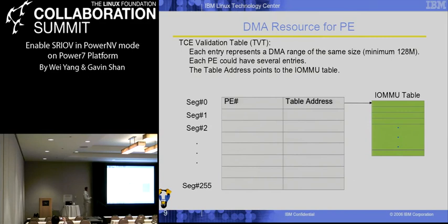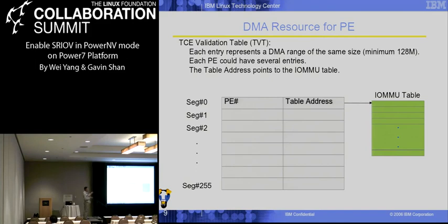The next one is called the CBT, the TCE Validation Table. This table is used to validate the DMA address and to do IOMMU mapping from the DMA address to the critical memory address. Each entry in this table represents a range of DMA space with the same size, but the minimum size on the Power platform is 128 megabytes. A PE can have several entries in this table if it requires more DMA resources. This table has a pointer to the IOMMU table to do the address mapping.